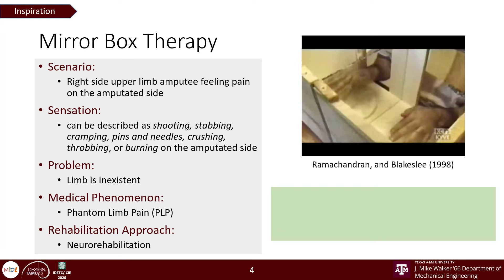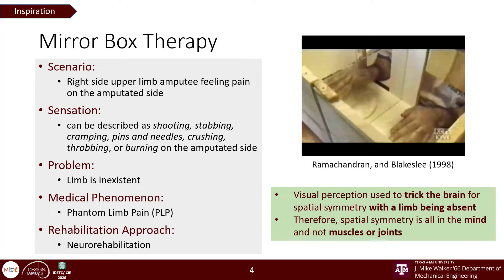Here we see that the visual feedback is used to trick the brain into perceiving the motor symmetry, even with the limb being absent. Thus confirming that humans perceive symmetry in the mind and not the muscles or joints of their body.